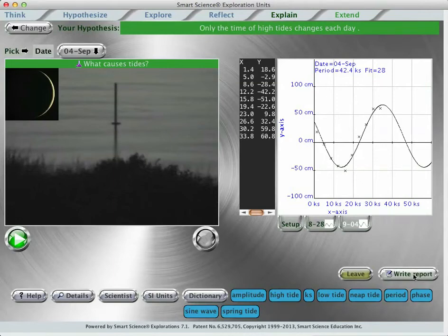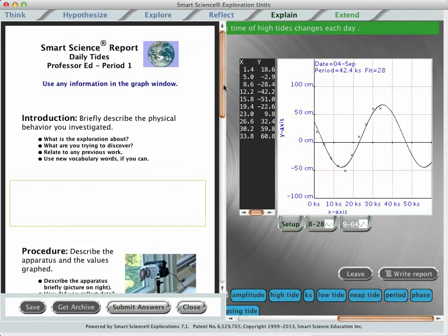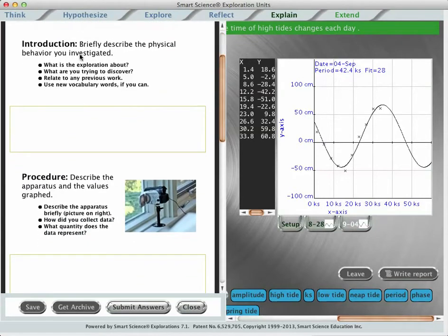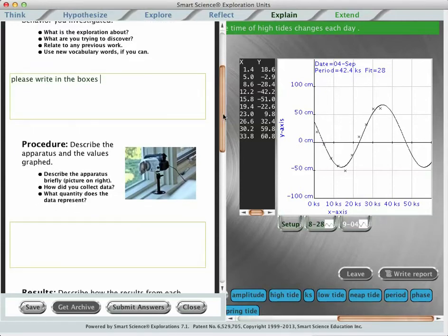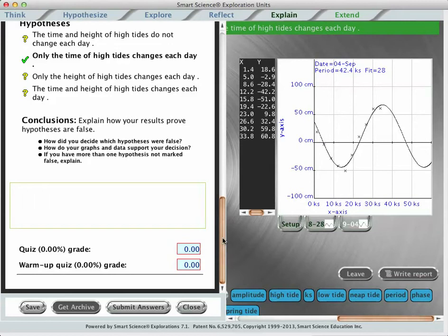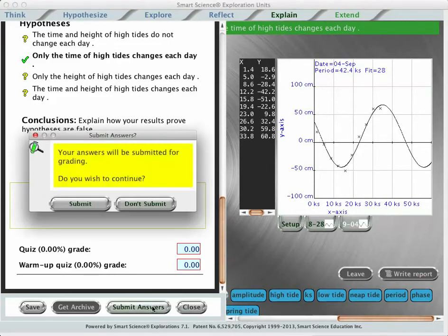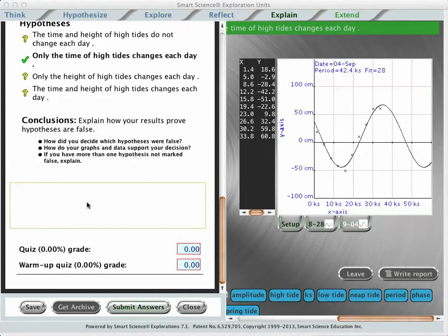Once the quiz is finished, a write report button appears, and we can go ahead and write about our experience. Notice that with each area the student can write, they have some bullet points that they must follow to fulfill the learning objectives for this area. Once the student has written in all of the text boxes, they may submit the answers to this lab report, and they have finished one activity in Smart Science.